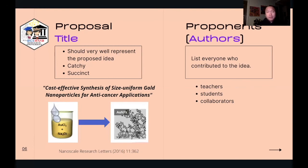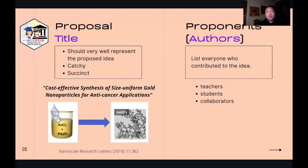Along with the proposal title, we typically list down the names of the proponents — the authors or those who came up with the idea. It is very important to make it a practice to identify everyone who contributed to the idea and to the proposal development, because that helps in building camaraderie and rapport within the group and builds a sense of community. Teachers, students, collaborators — whoever contributed ideas, you put them there. Along with the names, especially if you're working collaboratively with people from different institutions, you also list down their affiliation — what school, company, or research institution they are part of. It is very important to give credit to everyone who contributed to the idea.